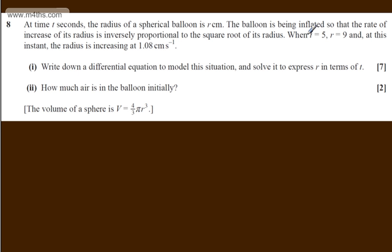When t equals 5, r equals 9, and at this instant, the radius is increasing at 1.08 centimeters per second. In the first part of the question, for 7 marks, we need to write down a differential equation to model this situation and solve it to express r in terms of t.